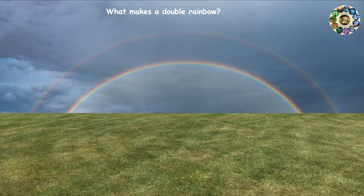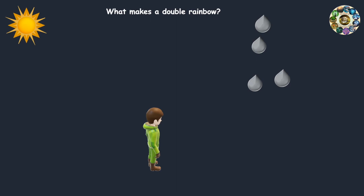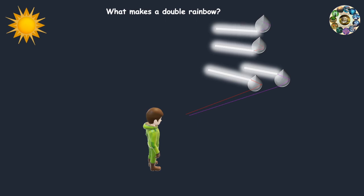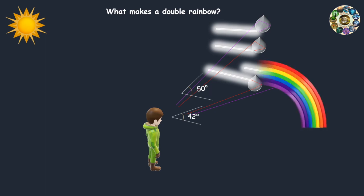Sometimes you can see another fainter secondary rainbow above the primary rainbow. The primary rainbow is caused from one reflection inside the water droplet. The secondary rainbow is caused by a second reflection inside the droplet, and this re-reflected light exits the drop at a different angle. It is about 50 degrees instead of 42 degrees for the red primary bow. This is why the secondary rainbow appears above the primary rainbow.